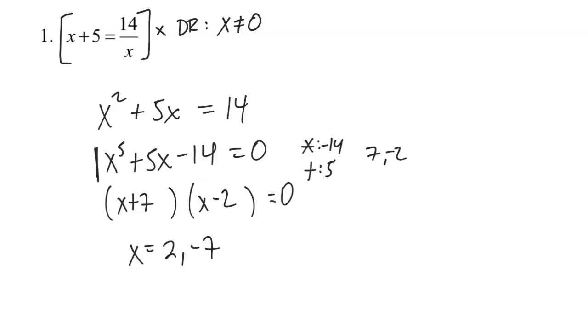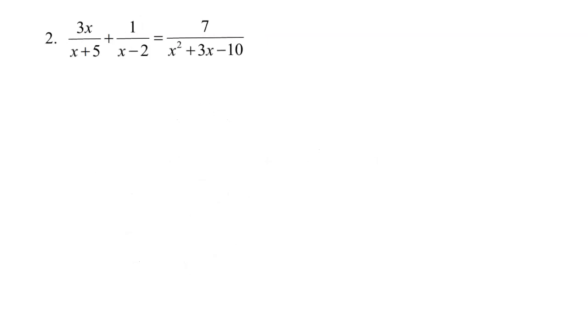Now, just a quick look back at my domain restriction. Back up here, we said that x could not equal zero. Notice that neither of my answers is zero, and therefore both of these answers will be acceptable. Whether they're correct depends on whether we did the solving correct or not. Remember that you can always check that just by plugging your answers back into the original equation and making sure that you get a true statement.